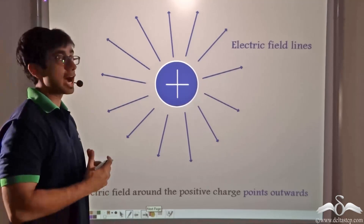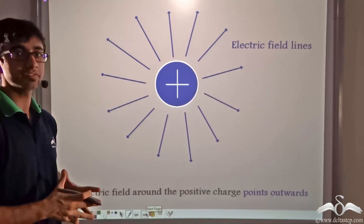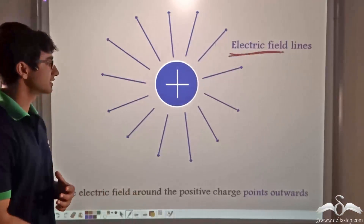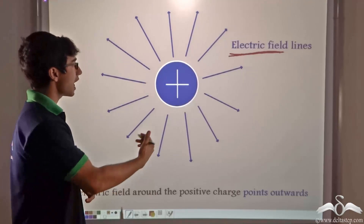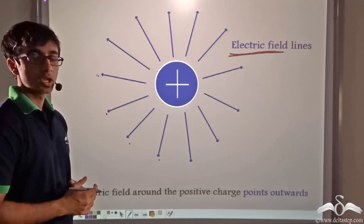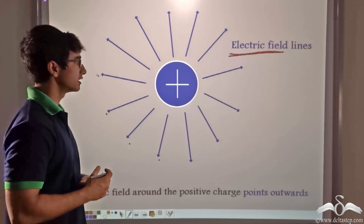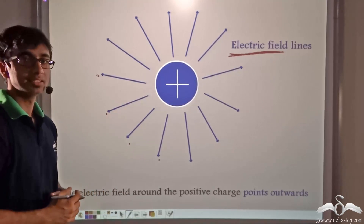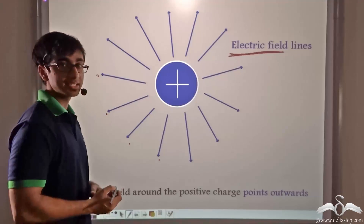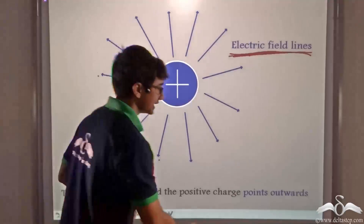Now we consider how the electric field is represented for positive and negative charges — how we can distinguish them based on field lines. Looking at the picture, certain lines have been drawn pointing outwards from the positive charge, as shown by the arrowheads. Since like charges repel, when a positive test charge is brought near a positive charge, they repel one another. Therefore, the electric field lines for a positive charge are considered as pointing outwards.